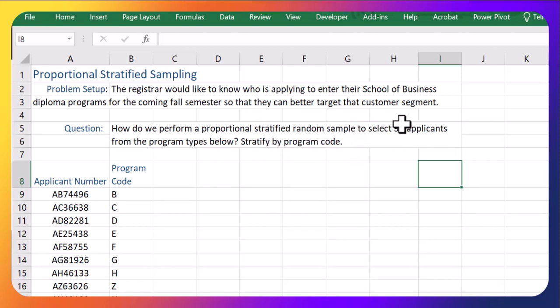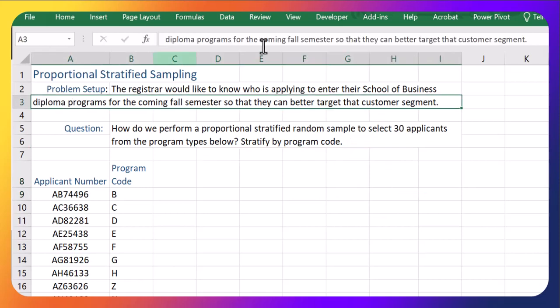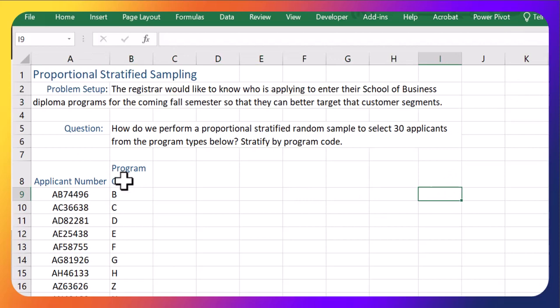We want to sample 30 applicants total. We want to figure out customer segments. We want to look by program and sample from each program proportional to how many students there are in that program. Let's go ahead and start this out and have a look.